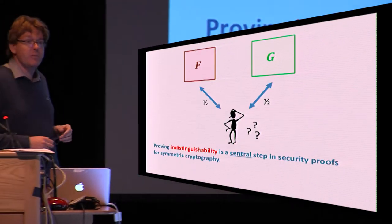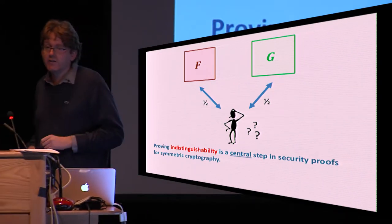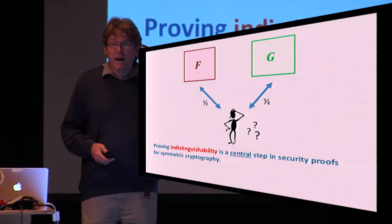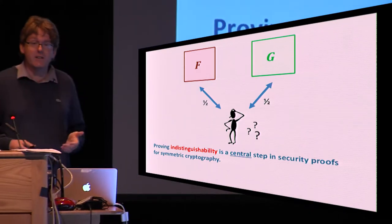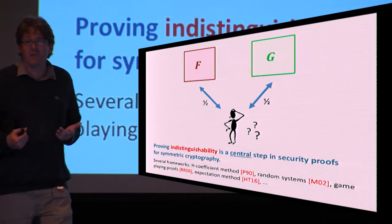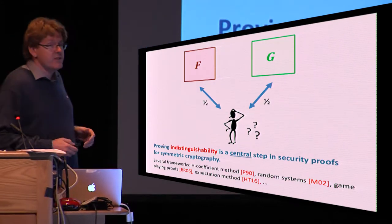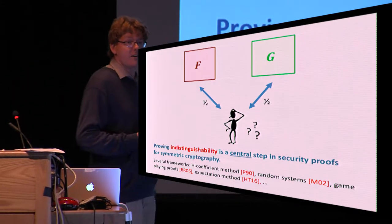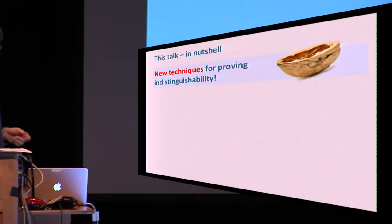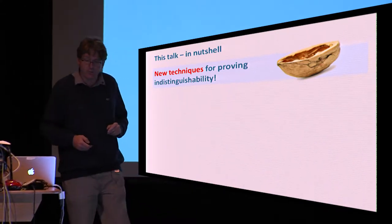This talk is about indistinguishability and the starting point is the fact that proving indistinguishability is a central step in assessing the security of symmetric cryptography. Very often we end up with fairly sophisticated proofs which are made of complex and error-prone probabilistic arguments. For this reason, several frameworks have been developed over the years to ease this task. Still, there's a number of very hard technical questions that remain open. The main purpose of this work was to come up with new techniques to enhance the set of results we can cover and for which we can prove indistinguishability.